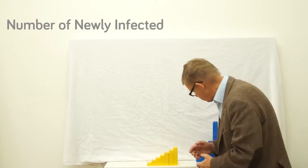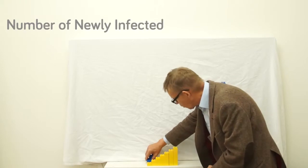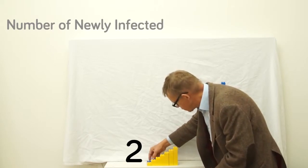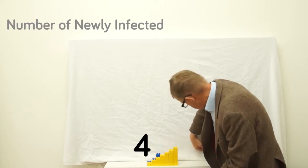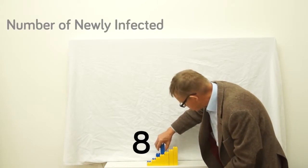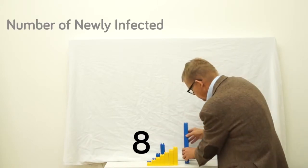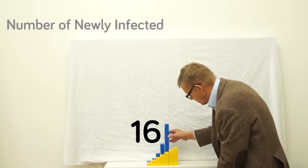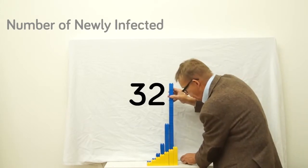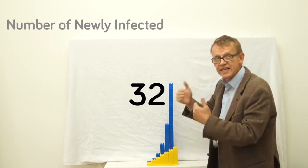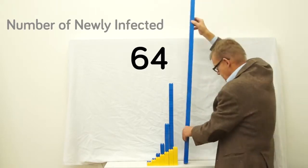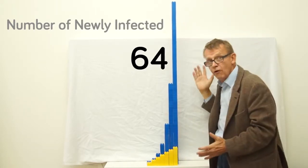That's not how Ebola increases. When one patient infects two others, it doubles from month to month. So this is what will happen with Ebola: one, two, four, eight, sixteen, thirty-two, and the next month twice as many—sixty-four.